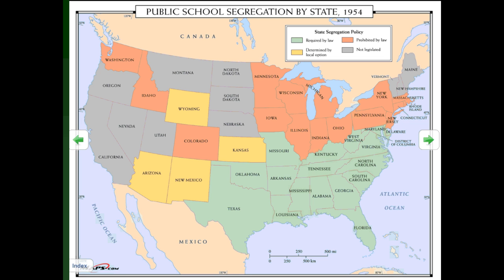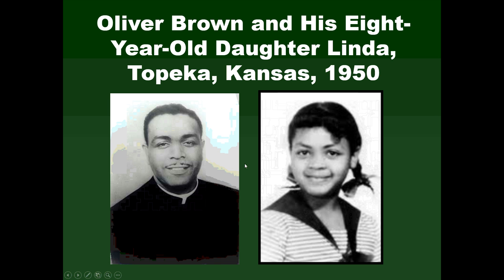These green states — in the South but not just in the South, including a state like Oklahoma — required segregation by race as a matter of law. It was not optional in the public schools. The northern states were the opposite: they prohibited segregation by race as a matter of law. These gray states did not take a position, as they didn't have large Black populations and generally allowed integration. These yellow states allowed this question to be determined by local option — each individual city, county, or area within the state could make its own decision. That would be Kansas, Wyoming, Arizona, and New Mexico.